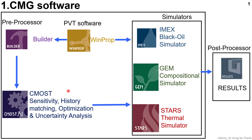In this module, AI and ML help you to provide robust solutions and support all the decisions you would like to make. In CMG there are three main simulators: first, IMEX — the light oil simulator; then GEM — the compositional simulator; and finally STARS — the thermal simulator.